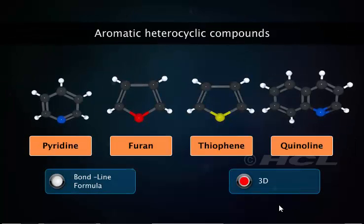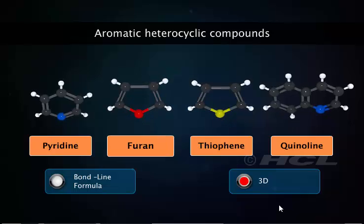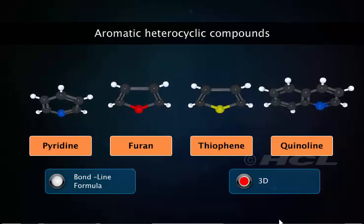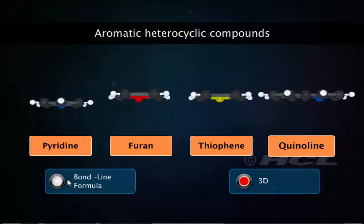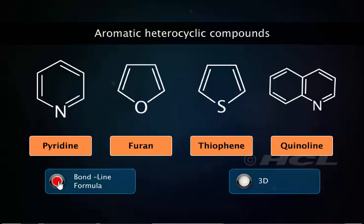Aromatic cyclic compounds containing one or more heteroatoms in their molecules are called aromatic heterocyclic compounds. Pyridine, furan, thiophene, and quinoline are examples of aromatic heterocyclic compounds.